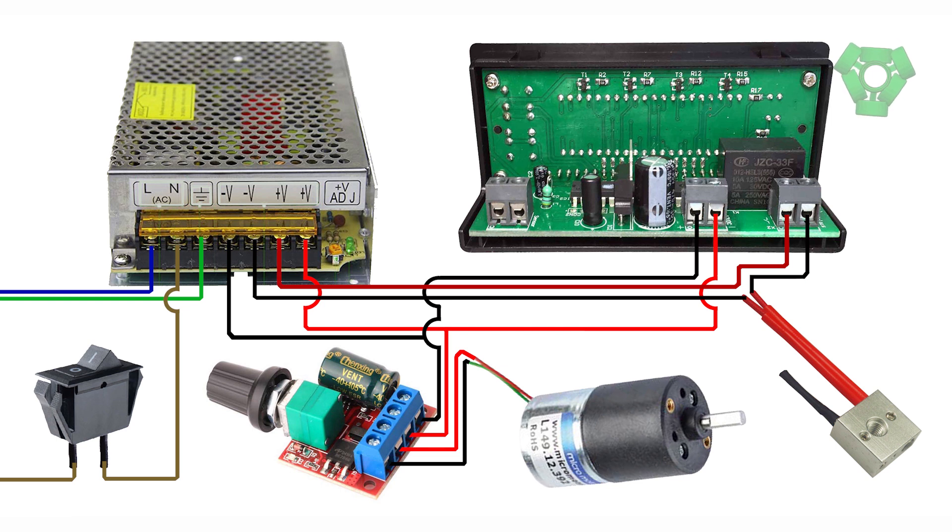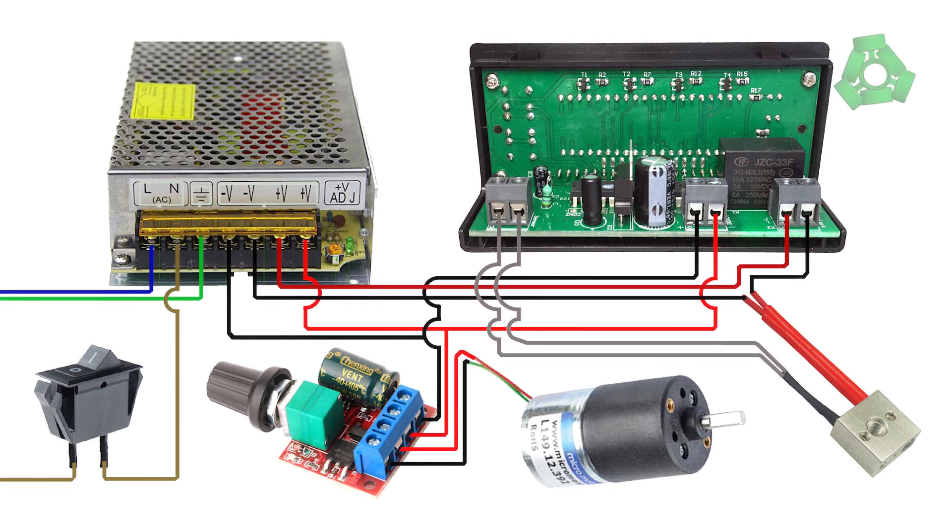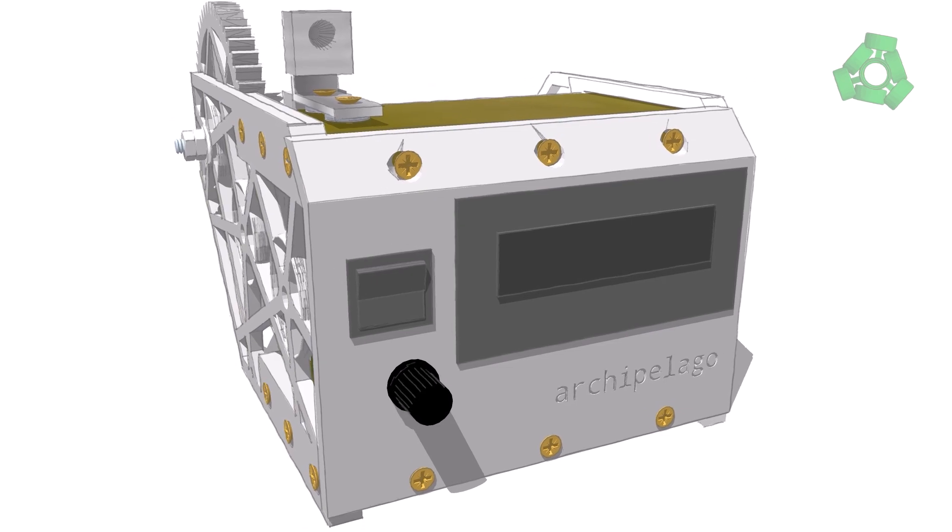Connect the two wires coming from the temperature sensor to the two remaining ports on the thermal controller. Test to see that all of the electronics are working properly before tying all of the wires together into the extruder frame and then screwing the faceplate onto the ports.